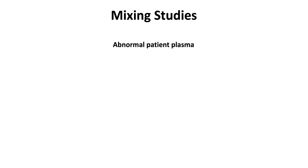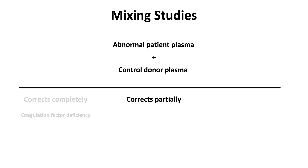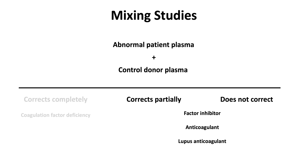When abnormal patient plasma is added to control donor plasma and it corrects completely, there is a coagulation factor deficiency. If it corrects partially or does not correct at all, there is an inhibitor, which could be due to a coagulation factor inhibitor, the presence of an anticoagulant, a lupus anticoagulant, or fibrin degradation products, which can be seen with disseminated intravascular coagulation.